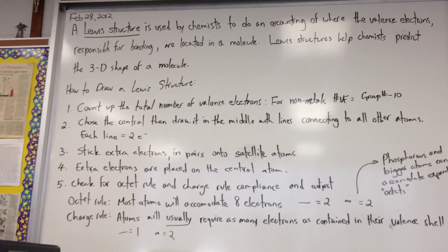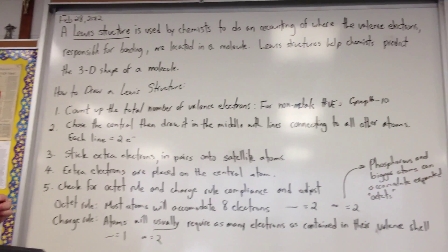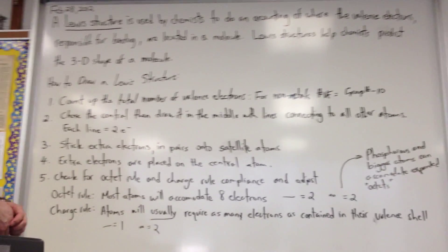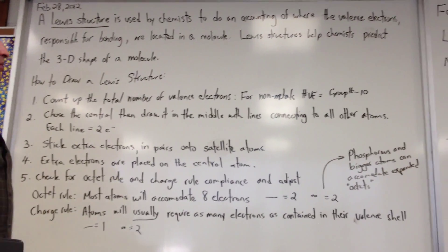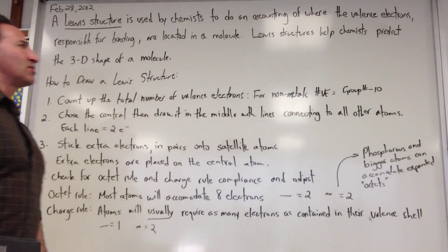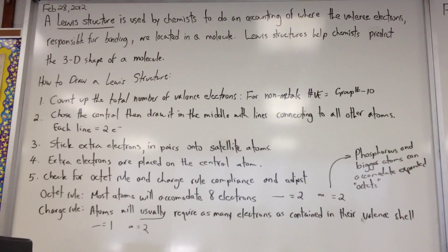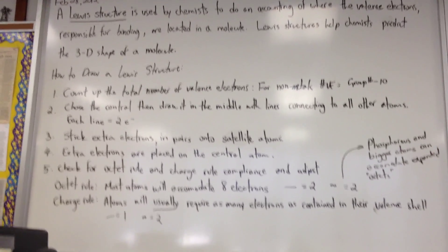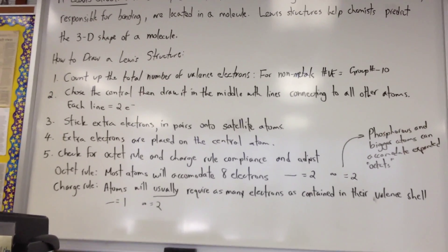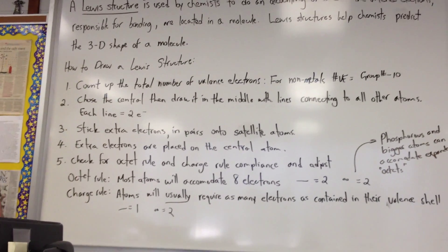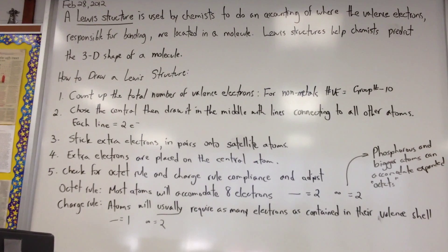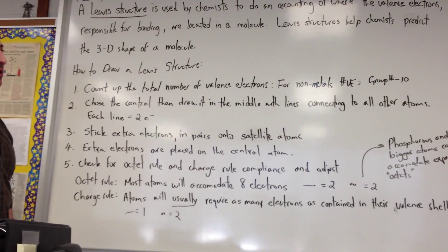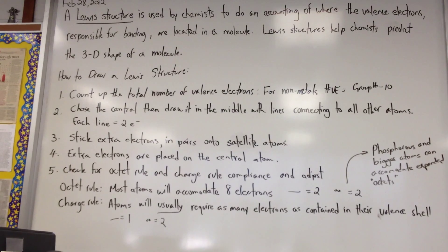Lewis structure is used by chemists to do an accounting of where the valence electrons responsible for bonding are located in the molecule. Recall that all of what we call chemistry takes place because of valence electrons. The core electrons don't participate in chemical reactions.